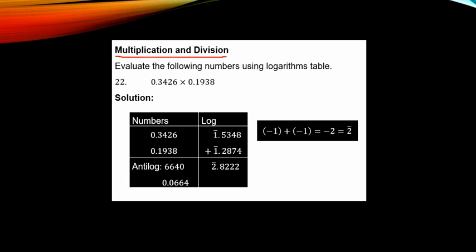Example 22: we have 0.3426 times 0.1938. These two numbers are less than 1. In the solution, we draw a simple table with two columns: first column is numbers, second column is log.